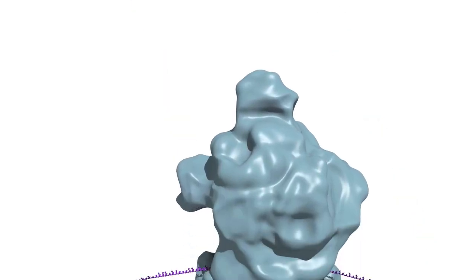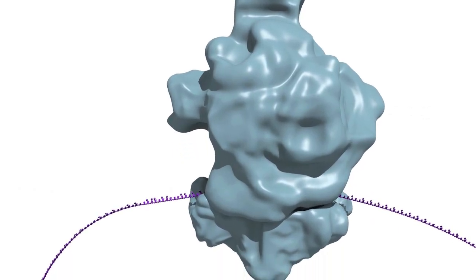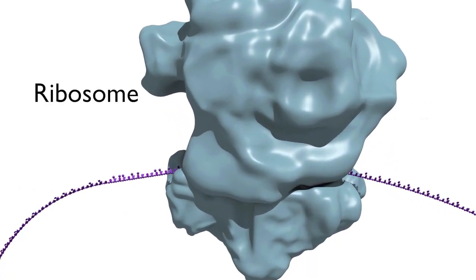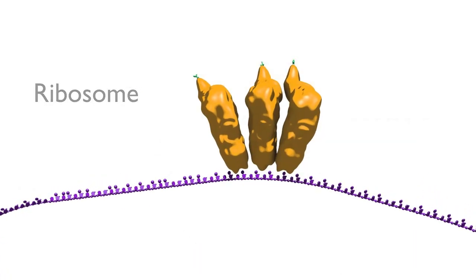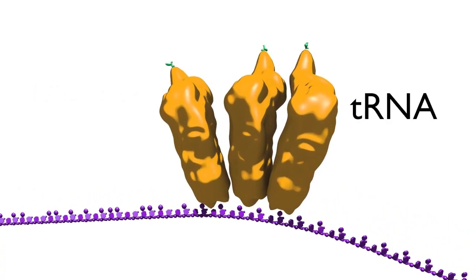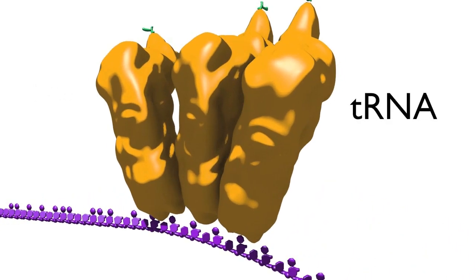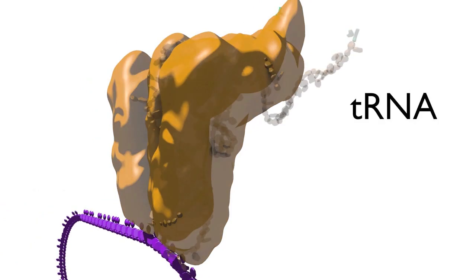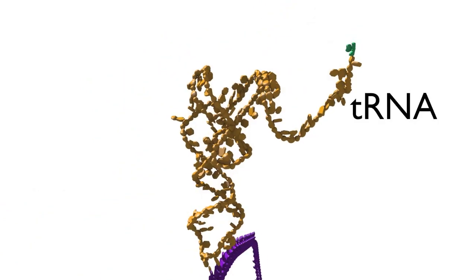This translation process is orchestrated by a large macromolecular ribonuclear protein machine in the cell, known as the ribosome. It uses a key adapter species known as a transfer RNA or tRNA. tRNAs are the molecules that actually translate the nucleotide sequence into an amino acid sequence.